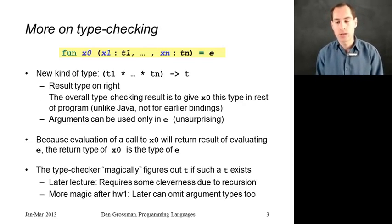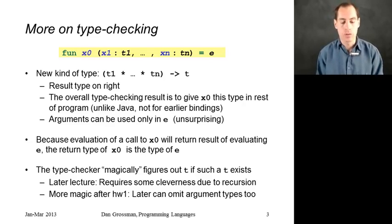Because the evaluation of a call to x0 is going to return the result of e, that type t, the return type for the function, is the type that e has. So what the type checker does is it type checks e, gets some type, and then that's the return type for x0. This is a little bit magical since we never wrote down t. The type checker is just able to figure it out, and we'll discuss later in the course how it's able to figure it out.